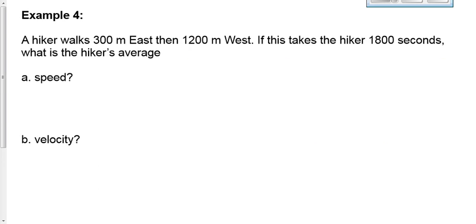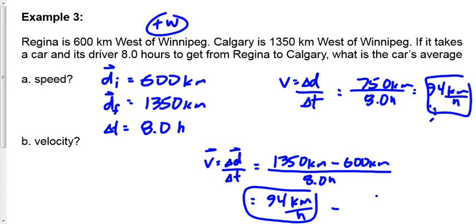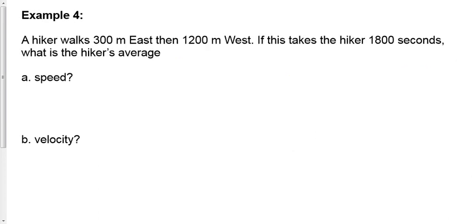Example four: a hiker walks 300 meters east, then 1200 meters west, taking 1800 seconds. What's the hiker's average speed and average velocity? These 300 m and 1200 m are displacements — how far the hiker has gone — not positions. To find average velocity, we add displacements to get total displacement, then divide by time.